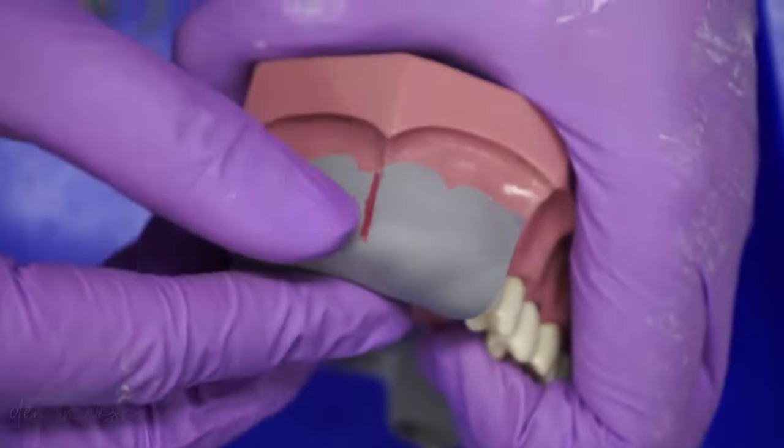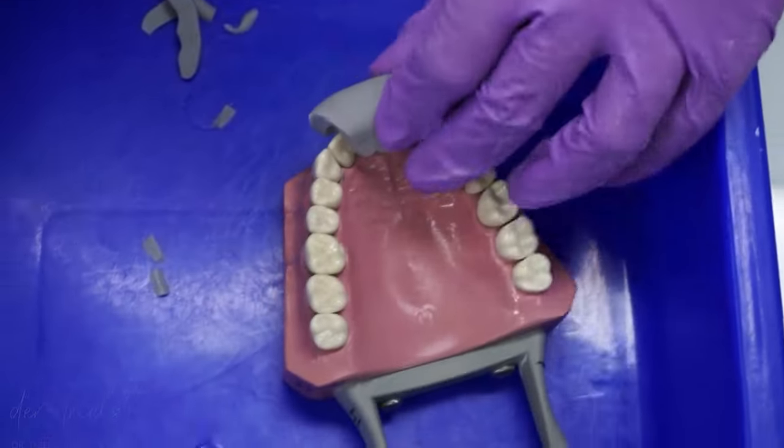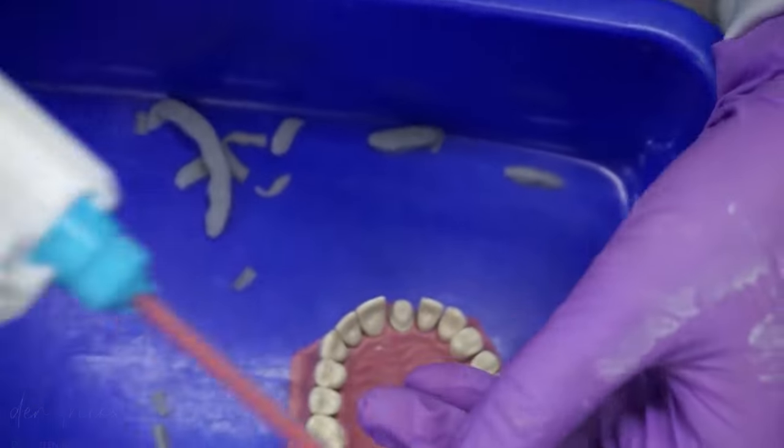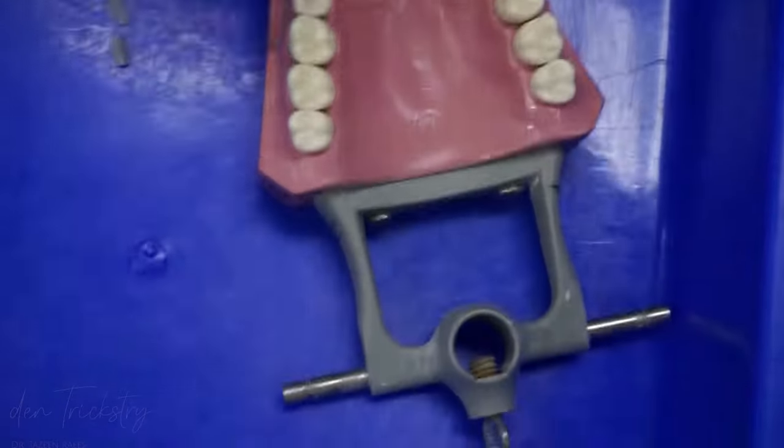Moving on, for the temporization itself or for making an immediate temporary crown, we use a self-cure temporization material. Here, I have used Dentsply Integrity in the shade A2. Before placing the material directly in the index, first confirm the position of the index intraorally.